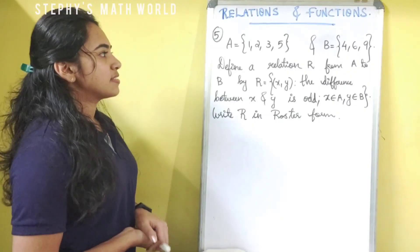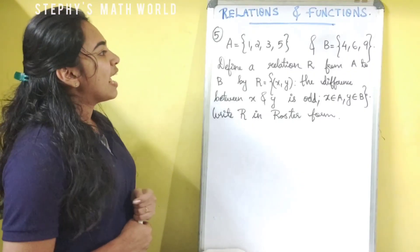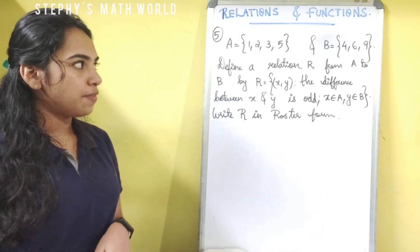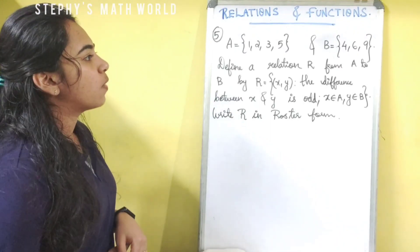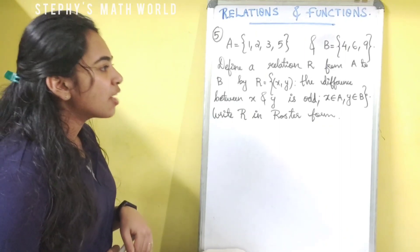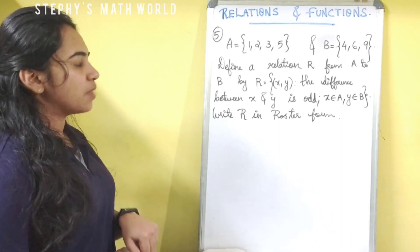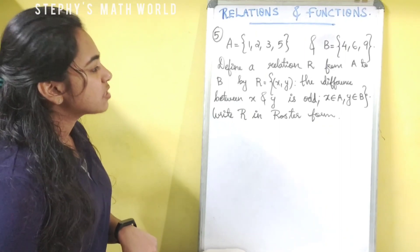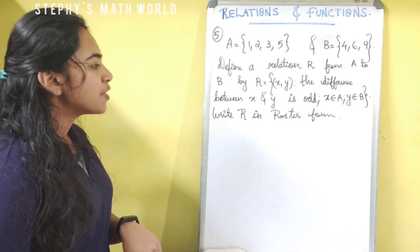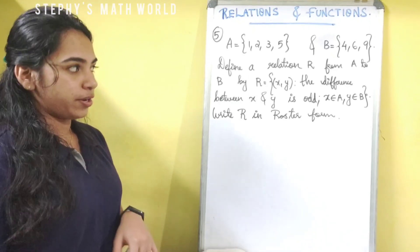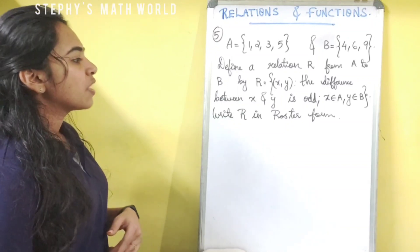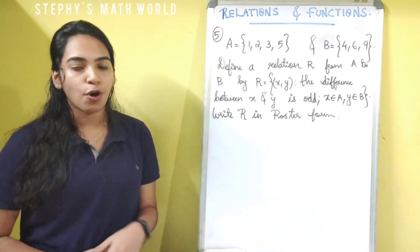Our fifth question is: we have set A equal to {1, 2, 3, 5} and B equal to {4, 6, 9}. Define a relation R from A to B by R equal to the set of ordered pairs (x, y) such that the difference between x and y is odd, where x belongs to A and y belongs to B. Write R in roster form.